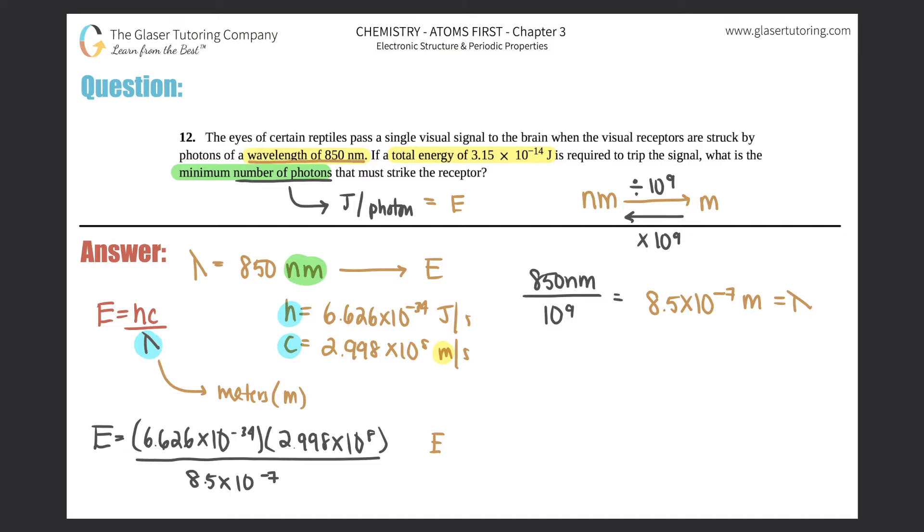2.3 times 10 to the negative 19th, and that's in joules.